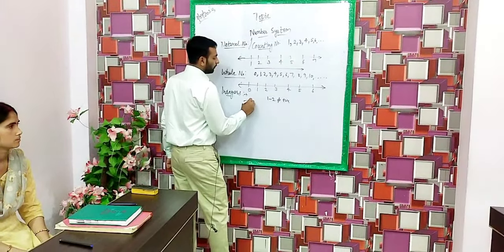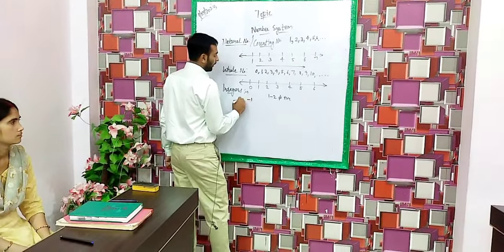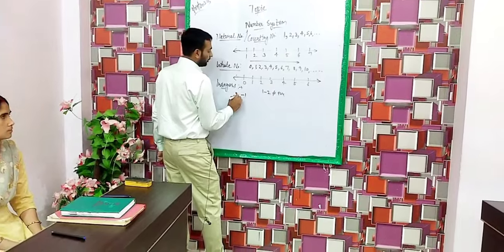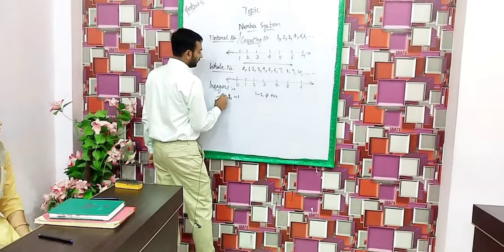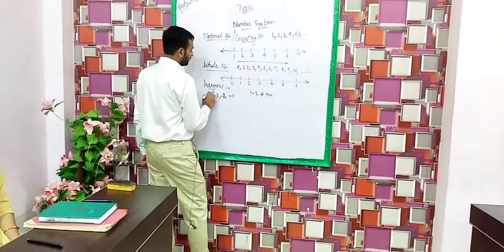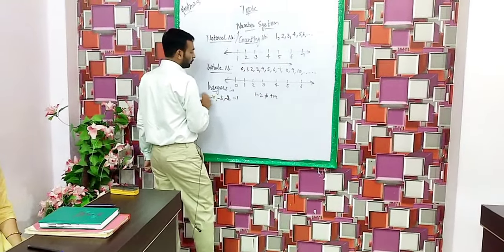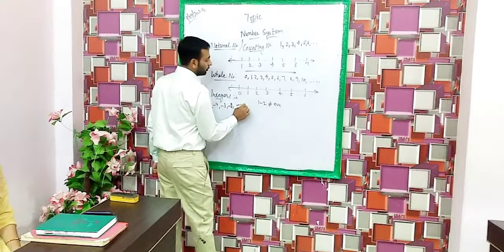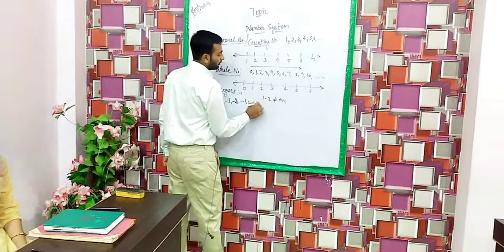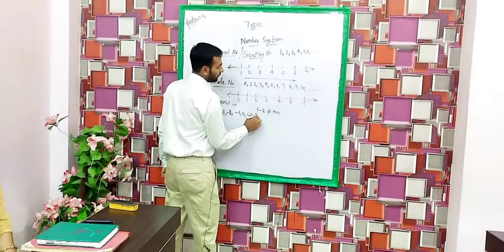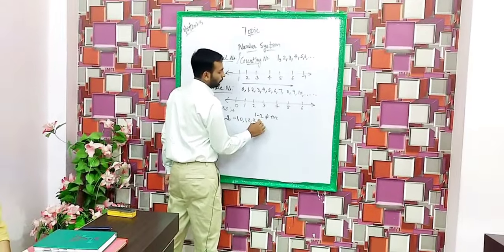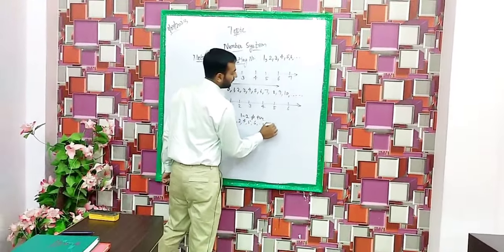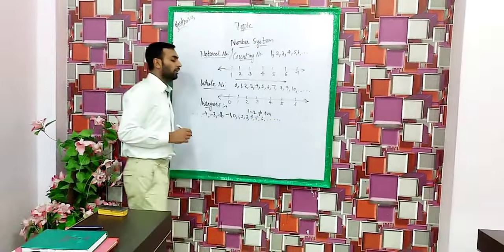So integers include negative numbers: minus 1, minus 2, minus 3, minus 4 and so on, as well as 0, 1, 2, 3, 4, 5, 6 and so on.